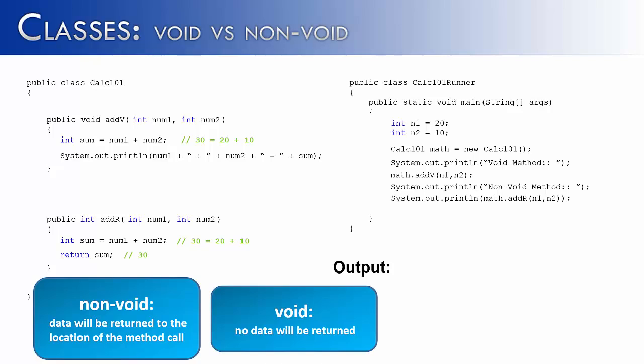and then prints out the sum of those numbers. AddR does something similar, except it adds the two numbers together, and then returns the sum back to where the method was called.